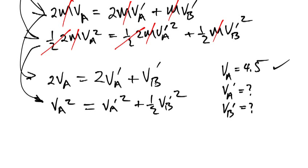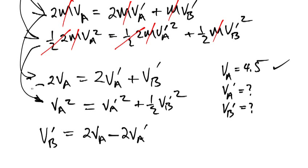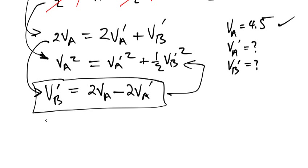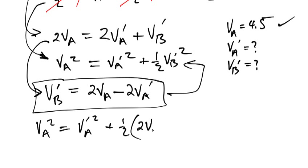To solve this, I'll use substitution. From the momentum equation, I'll isolate VB prime: VB prime equals 2·VA minus 2·VA prime. Now I'll substitute this expression into the kinetic energy equation: VA squared equals VA prime squared plus one-half times (2·VA minus 2·VA prime) squared.